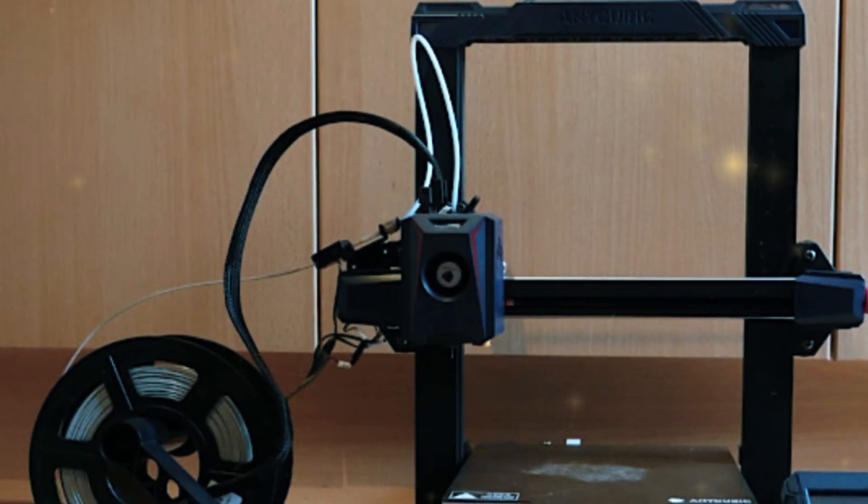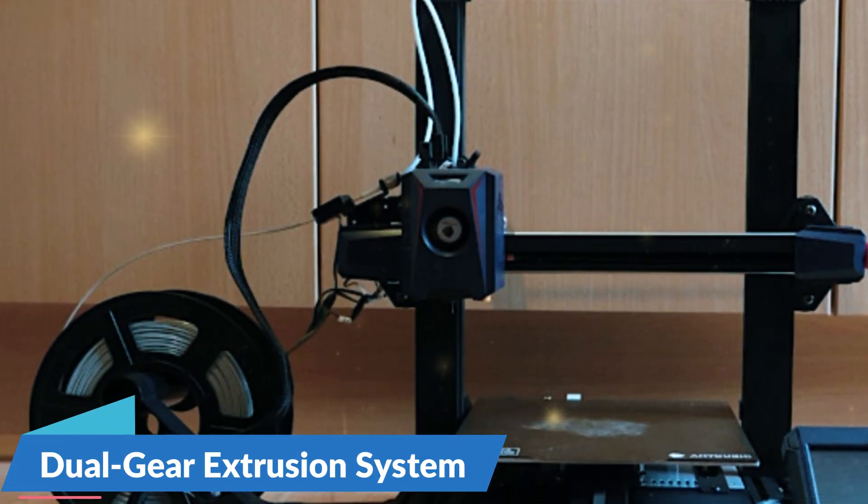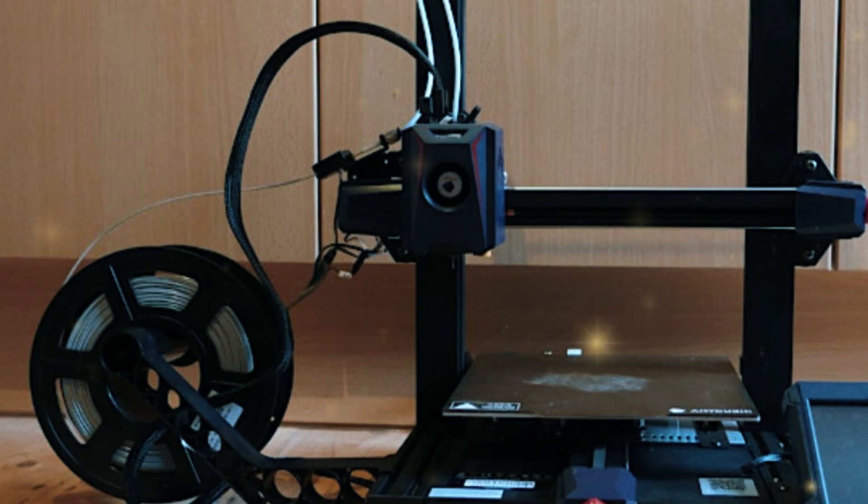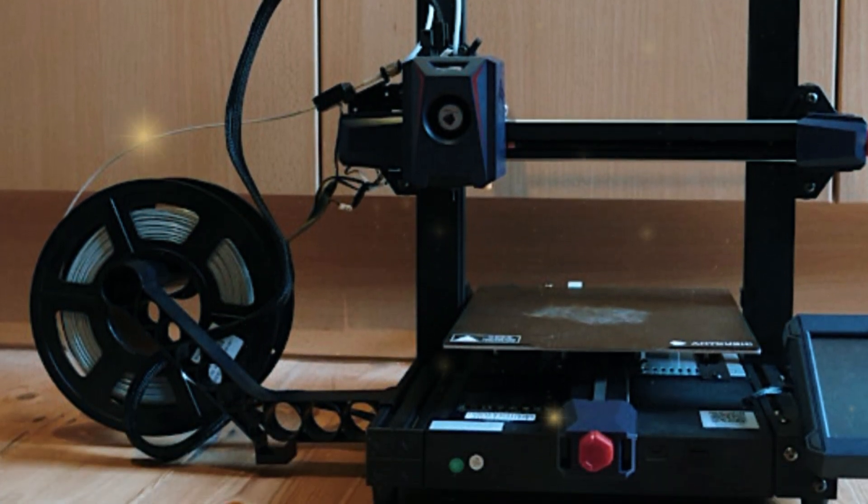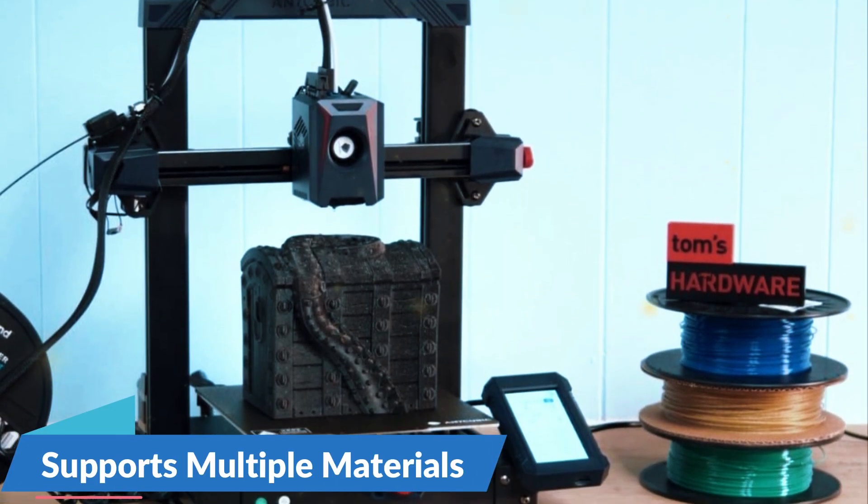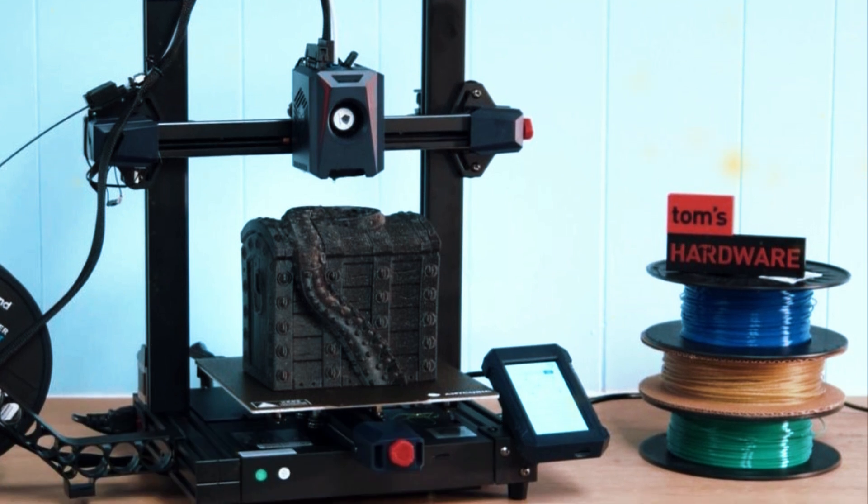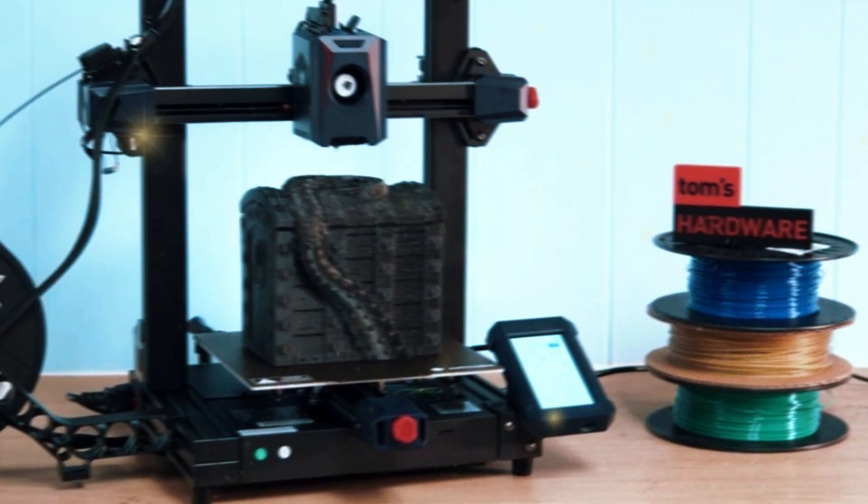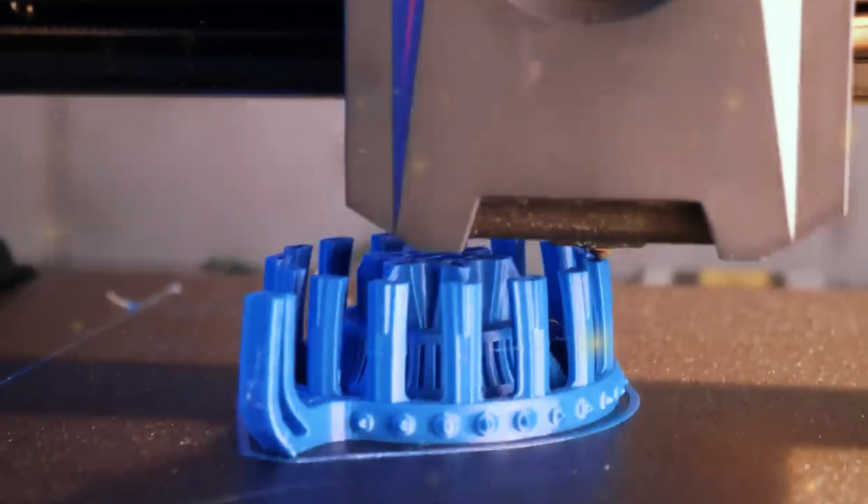Another impressive feature is its Dual Gear Extrusion System, which provides consistent filament feeding, reducing the risk of under-extrusion and improving overall print quality. The Cobra 2 also supports a wide range of materials, including PLA, ABS, TPU, and PAE, making it a versatile choice for different types of projects.